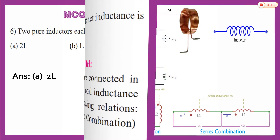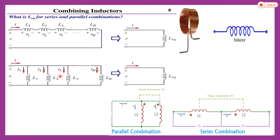Let me show you the diagrams for inductance in series and inductance in parallel. In series, the same current flows through each inductor, and L equivalent = L1 + L2 + L3. In parallel, different currents flow through each inductor, and 1/L_equivalent = 1/L1 + 1/L2 + 1/L3.